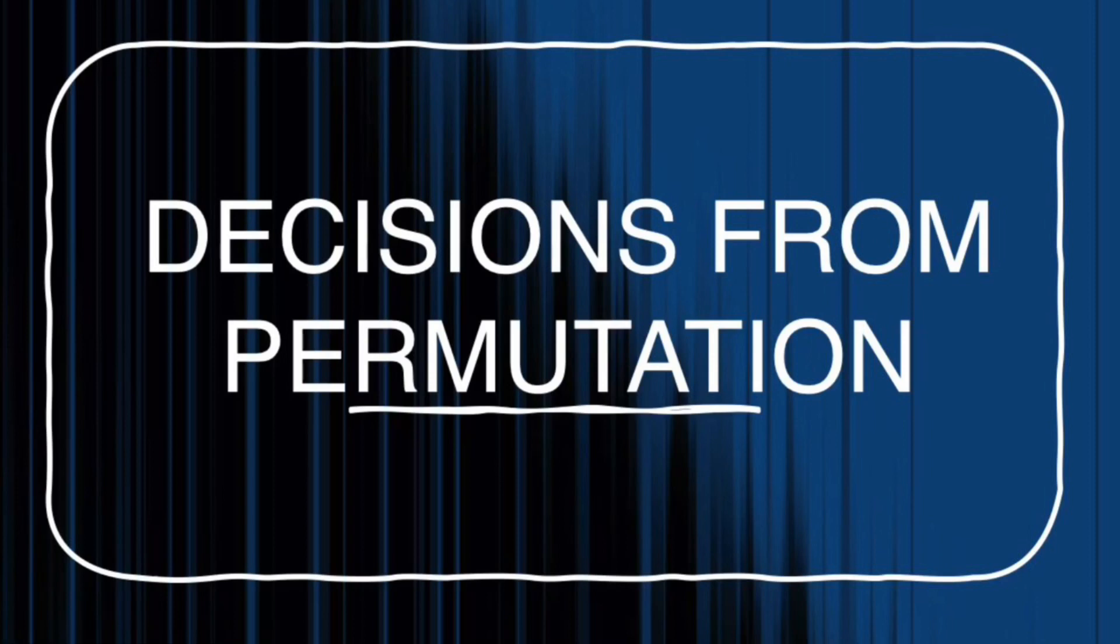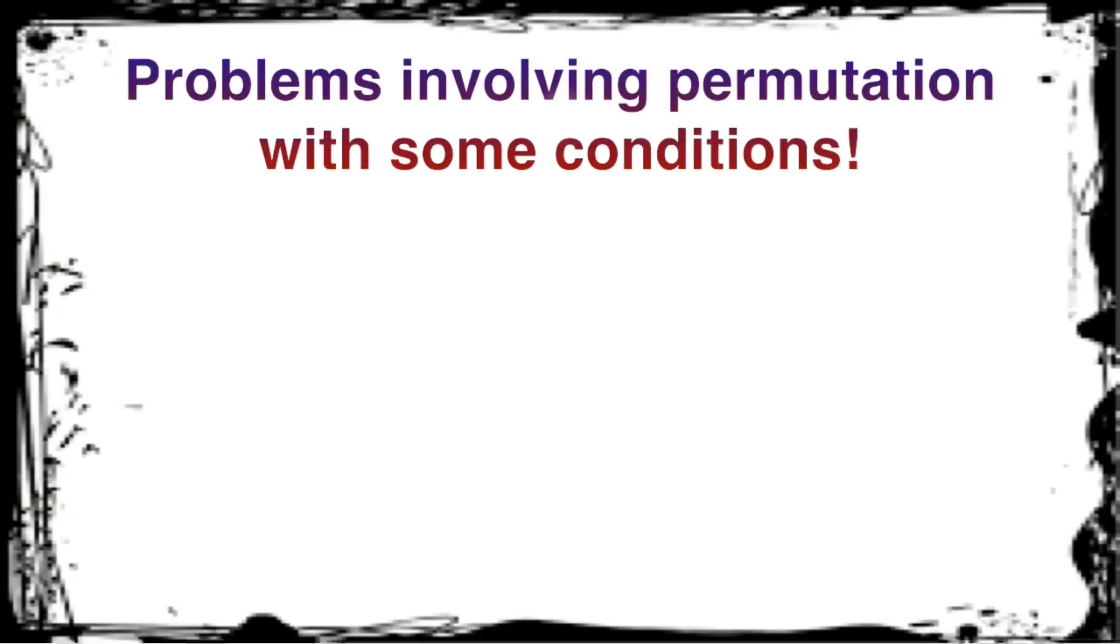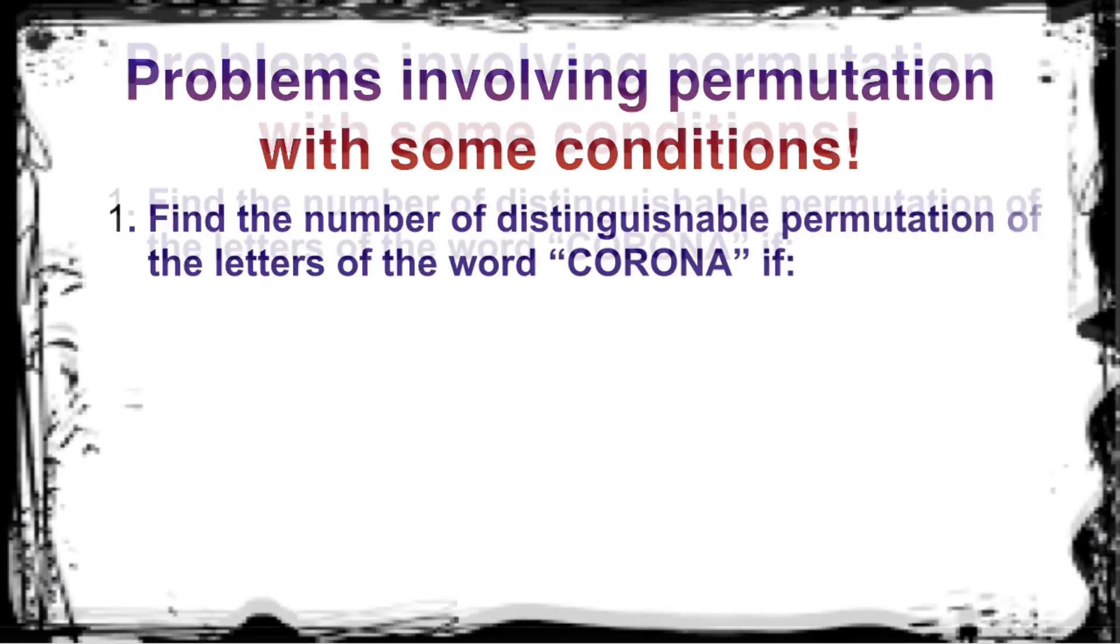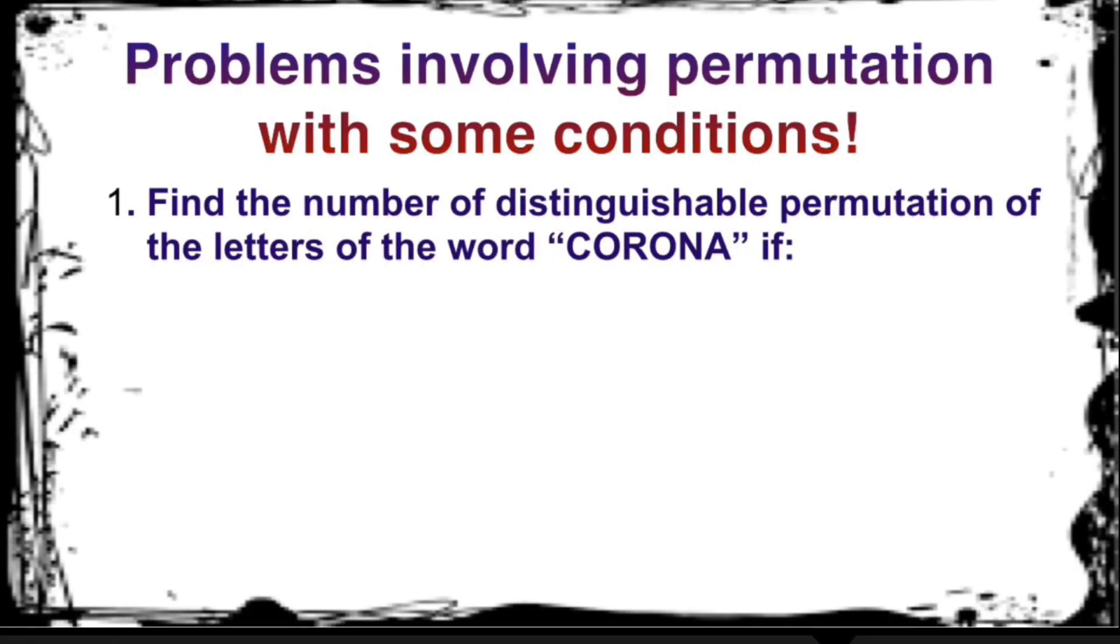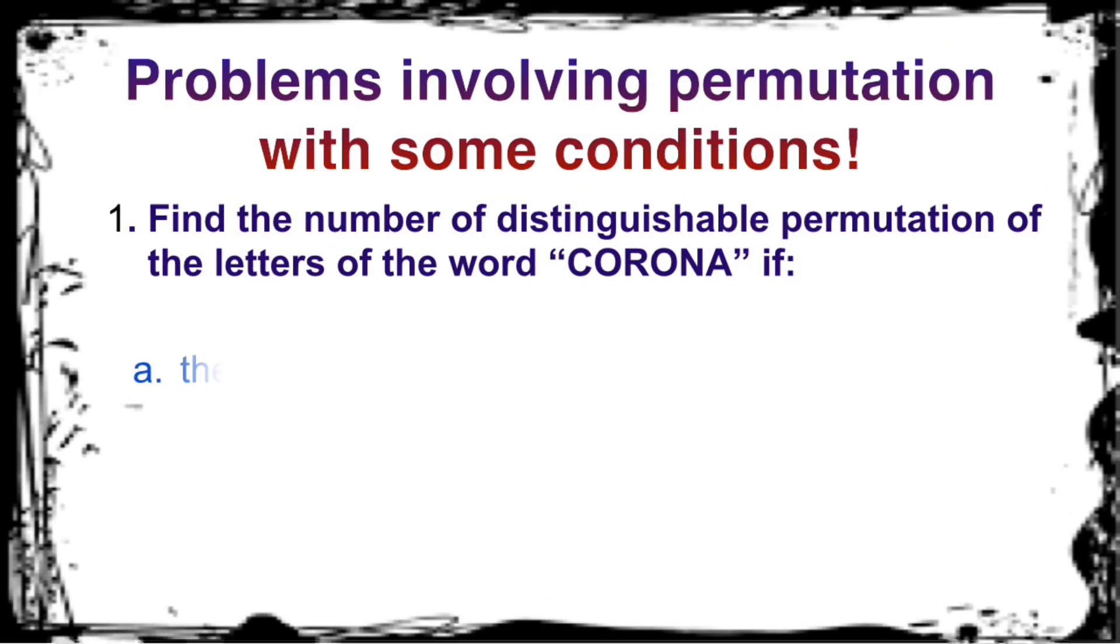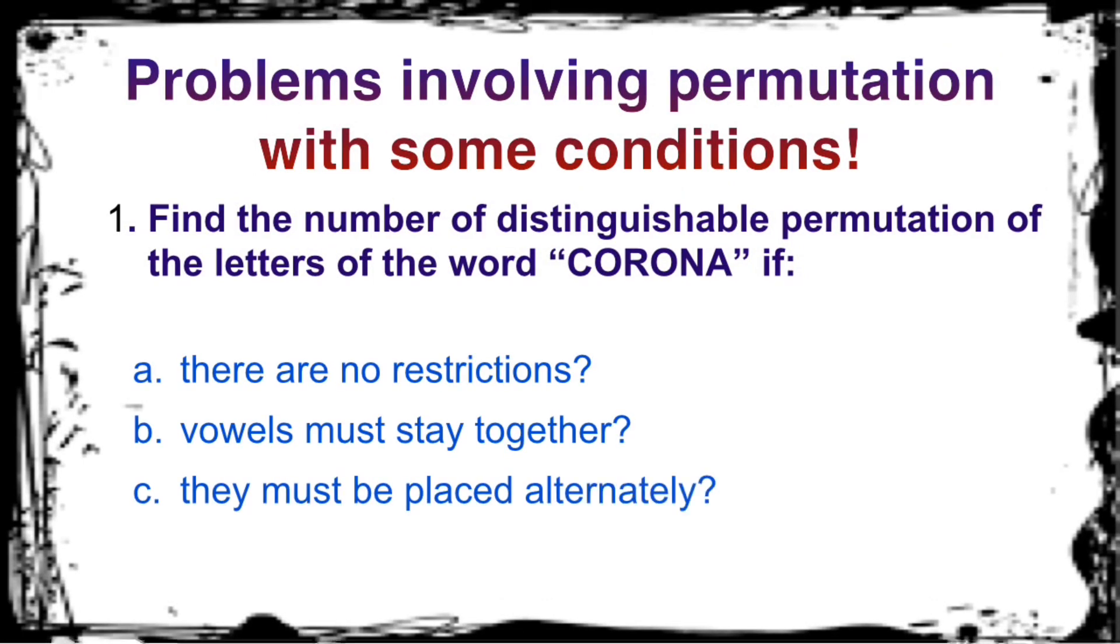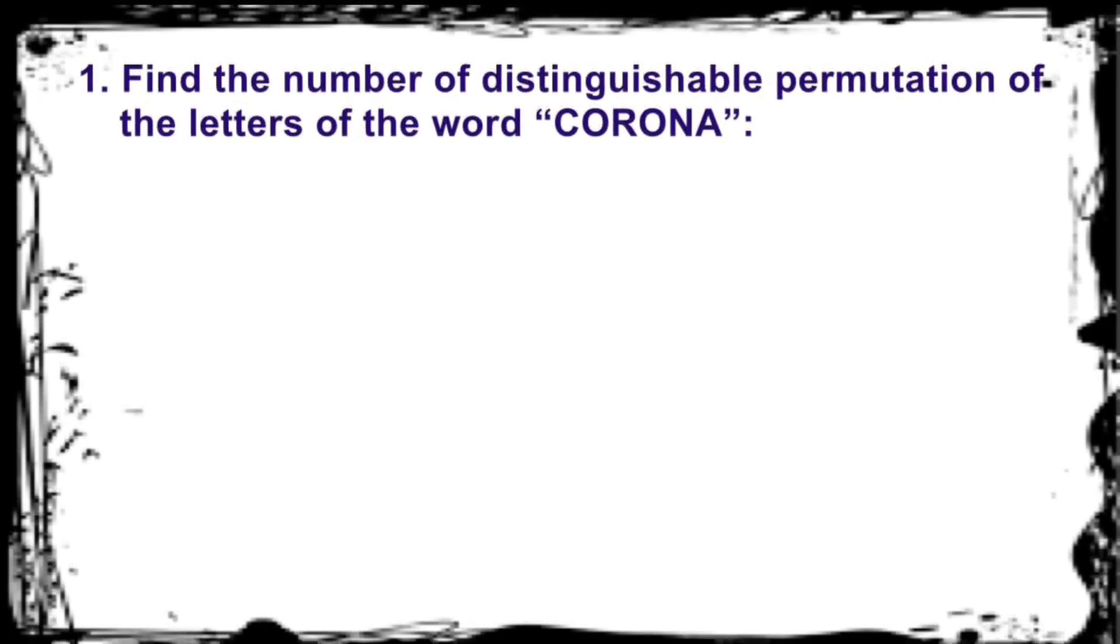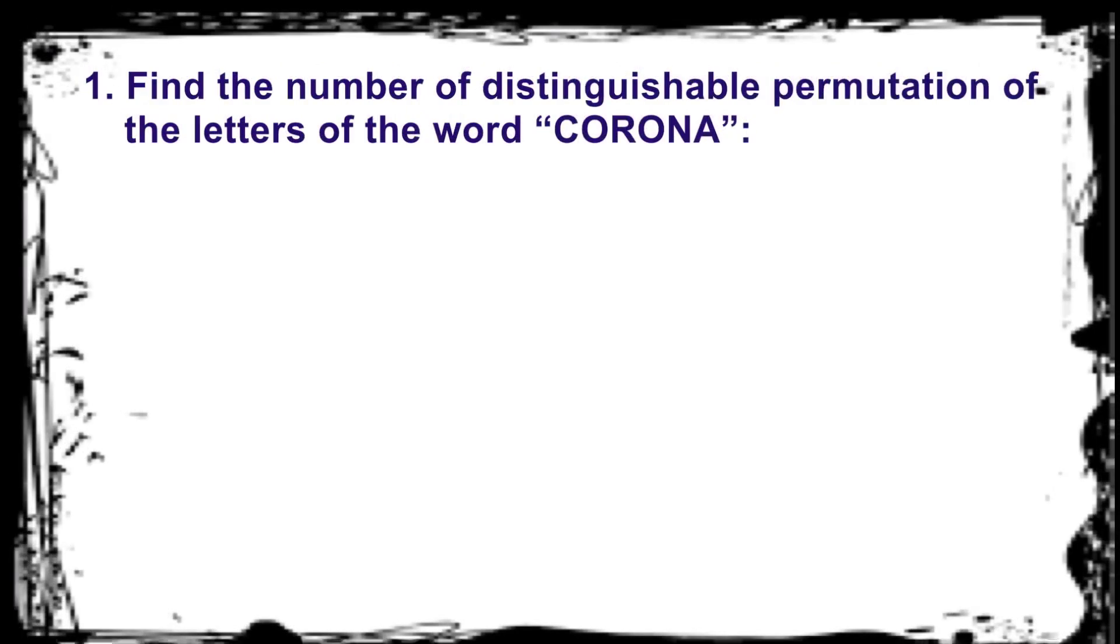Today, let's talk about distinguishable permutation. Try this problem that involves permutation with condition. You may pause this video and solve. Find the distinguishable permutation of the letters of the word CORONA if there are no restrictions. No restriction means in any place or position.